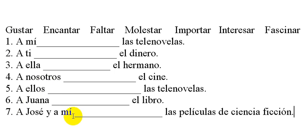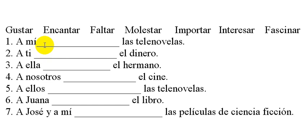What I've done is before the blank I've put these: a él, a ella, a mí — to trigger the subject and tell you who it is that likes, or is bothered by, or something that's important to them. So you need to put that pronoun first — the me, te, le, nos, os, or les — and then you're going to put the verb after it. The verb needs to agree in number with the thing that comes after it.